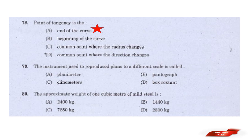Question: The instrument used to reproduce plans to a different scale is called — options: Planimeter, Pantograph, Clinometer, Box sextant. Answer: Option B — Pantograph. The instrument used to reproduce plans to a different scale is called a Pantograph.